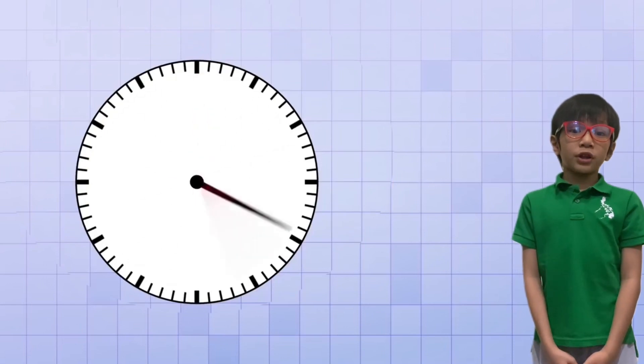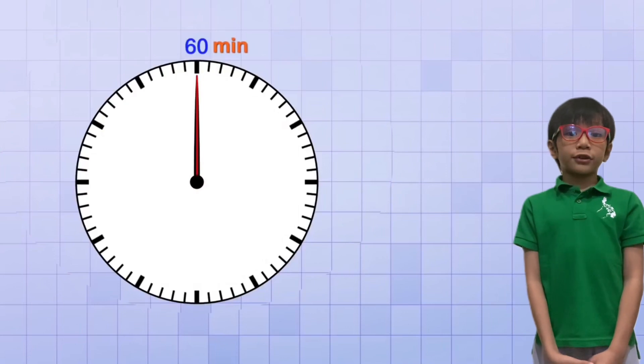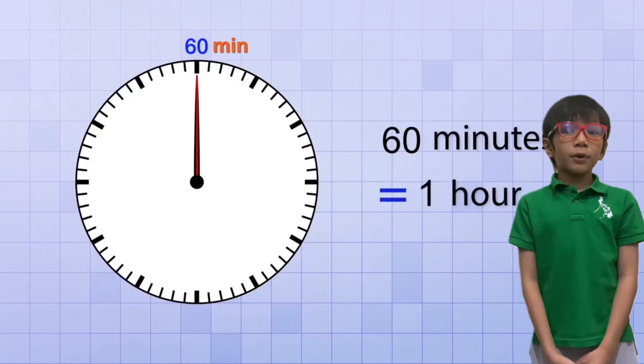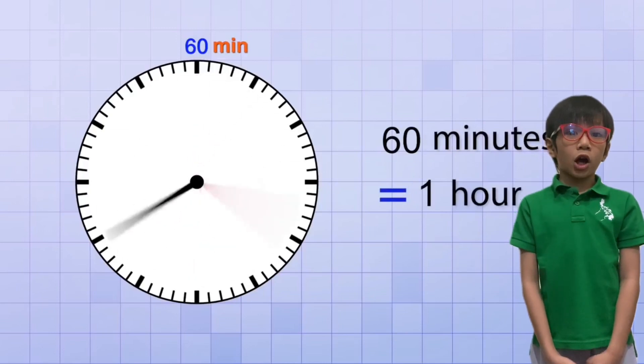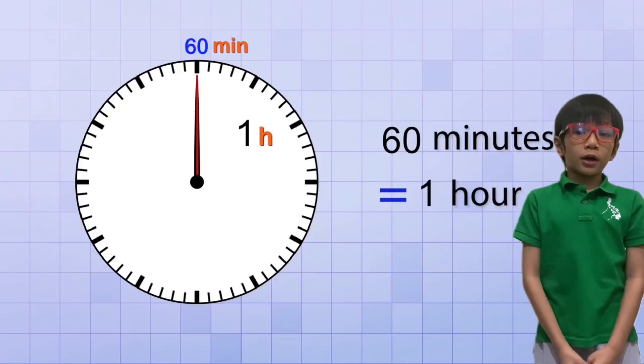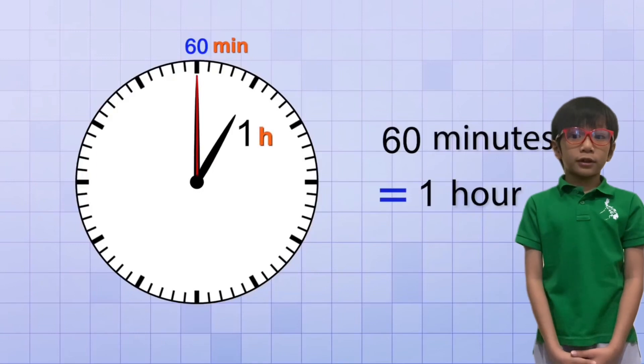So what happens when eventually the minute hand goes all the way around the clock? That is called 60 minutes. 60 minutes is equivalent to one hour. When the minute hand goes all the way around the clock, one hour of time has passed. And that's how we track the hour hand, and that's how we tell the time.